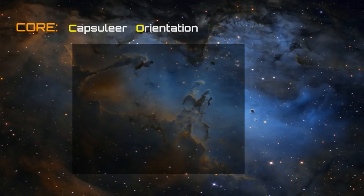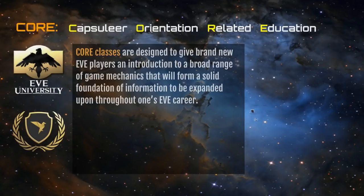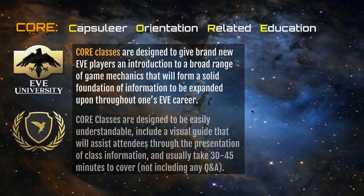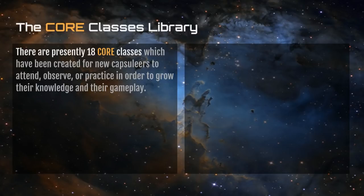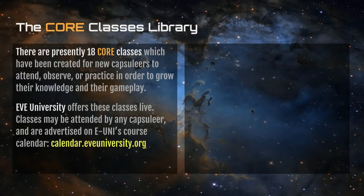This is a CORE course — CORE standing for Capsuleer Orientation Related Education. It's a curriculum created by EVE University and the CORE classes are designed to help you as a new player gain some understanding of the game mechanics. The classes are designed to be easily understandable, include a visual guide, and will usually take 30 to 45 minutes to cover. Of course the purpose of this is to make you a better Capsuleer. The CORE classes library includes 18 classes which have been created for Capsuleers to attend, observe, practice, and generally learn from.